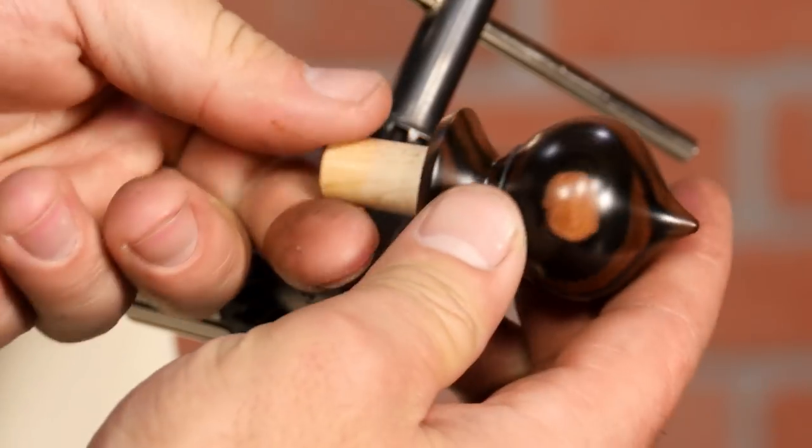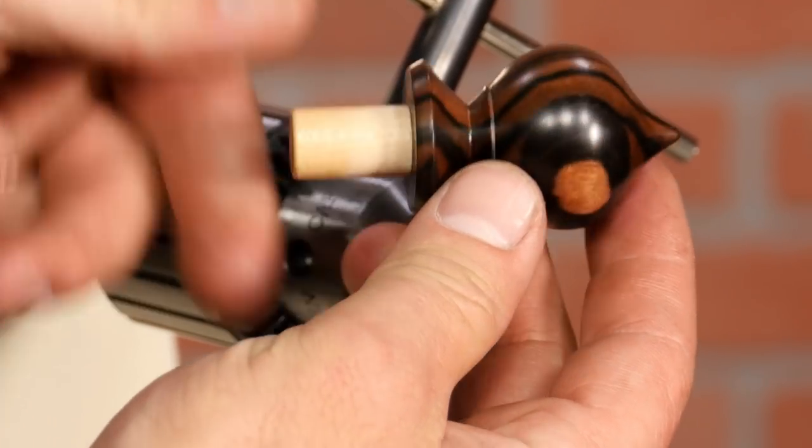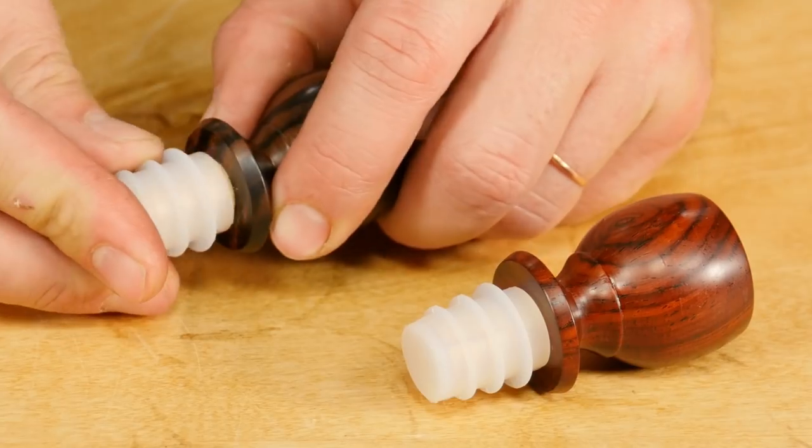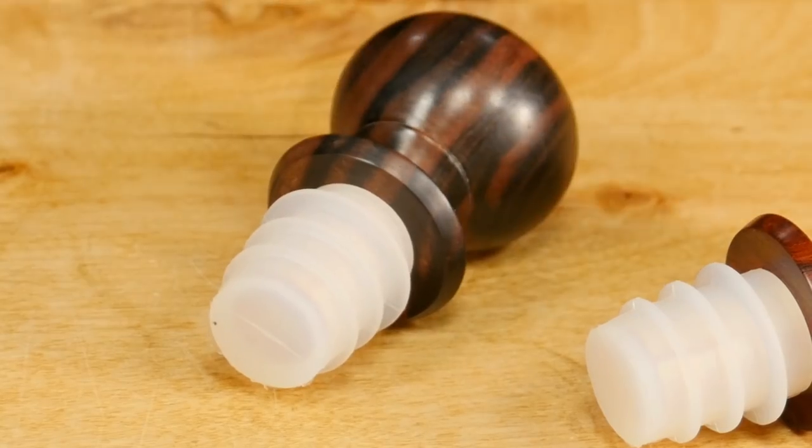It provides a really strong grip without indenting the wood, and this is especially useful for bottle stoppers where the gripped end can be seen when it's finished.